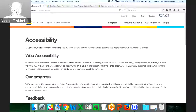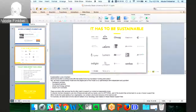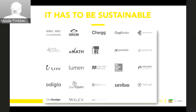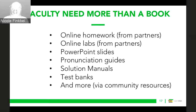We also revise our books when it's pedagogically necessary — for example, we already have a second edition of our sociology book. One of the biggest concerns faculty have is whether the content will be kept up. Through the sustainability model, we're absolutely able to do that. Using partner resources is completely optional, but many faculty find them helpful. We also found that faculty needed more than a book — things like homework systems, labs, PowerPoint slides, and pronunciation guides.